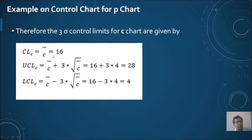The upper control limit, if we put all the values, comes out to be 28, and the lower control limit is equal to 4.